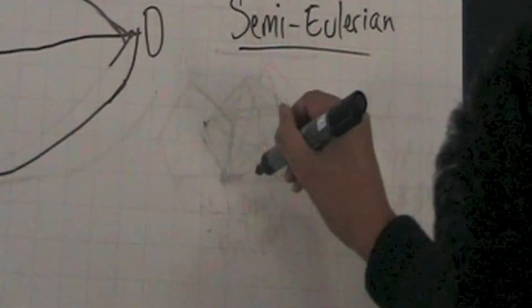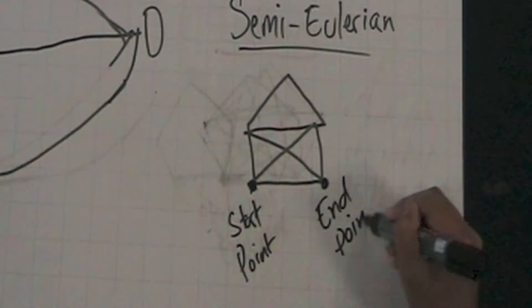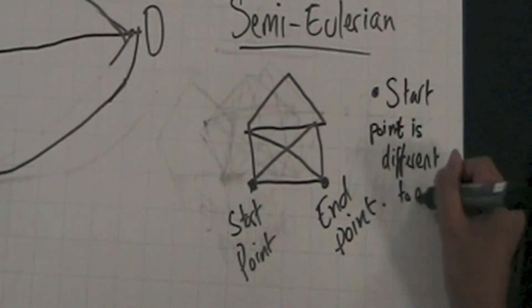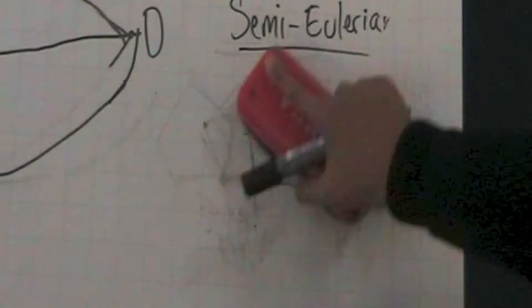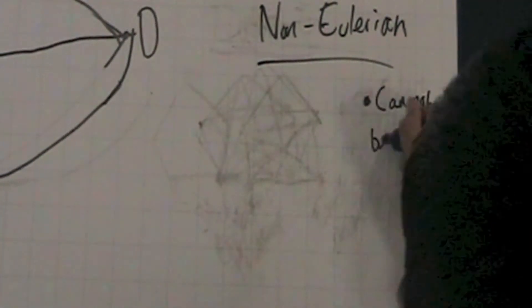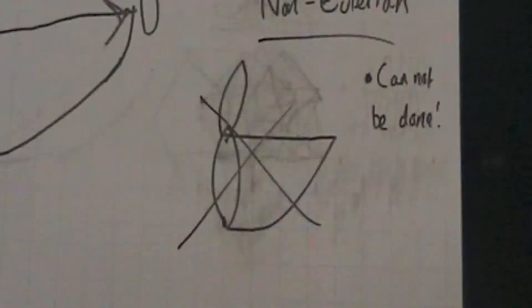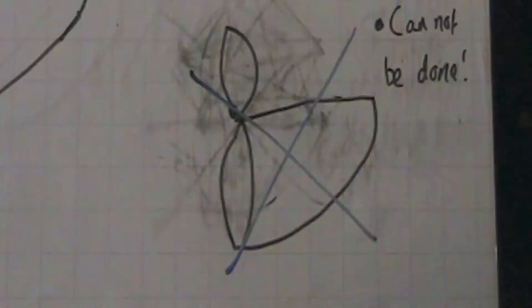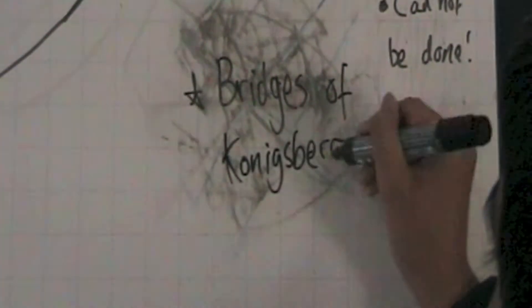Semi-Eulerian graphs can start and end at different vertices, but can still be drawn without retracing any edges. Non-Eulerian graphs are different, because they cannot be drawn without going back over any edges. As we can see, the bridges of Königsberg appears to be non-Eulerian.